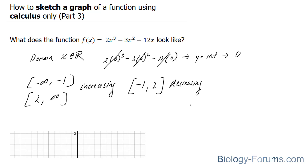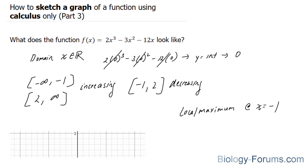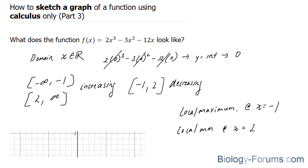In part two of this video, we also learned that there was a local maximum at x is equal to negative 1, and there was a local minimum at x is equal to positive 2. We used the second derivative test to find that.